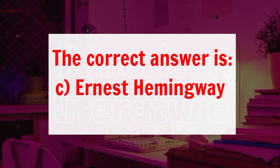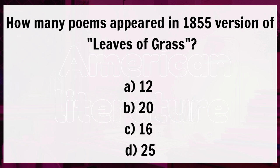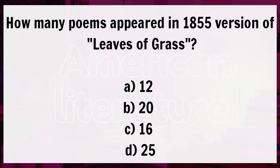Question 25: how many poems appeared in the 1855 version of Leaves of Grass? Option A, 12. B, 16. C, 20. D, 25. The correct answer here is Option A, 12. Leaves of Grass is a collection of poetry by American author Walt Whitman. The first edition of 12 poems was published anonymously in 1855. It was followed by 5 revised and 3 reissued editions. Thank you for watching this video.